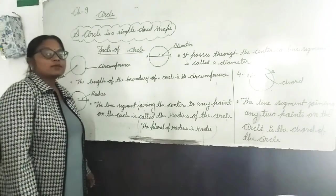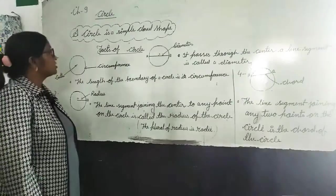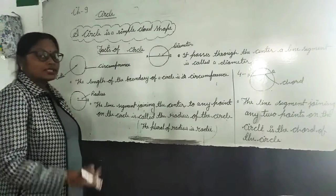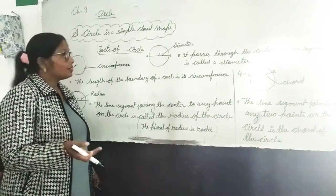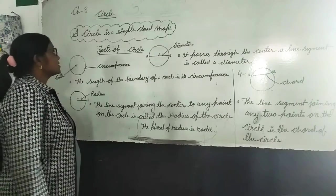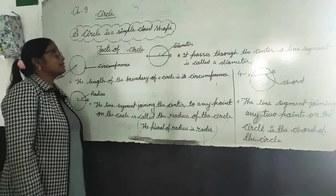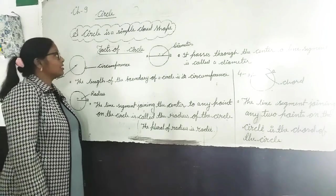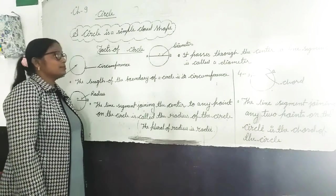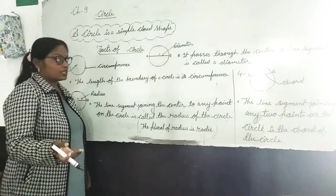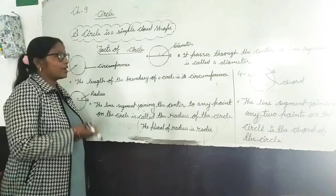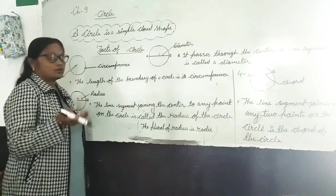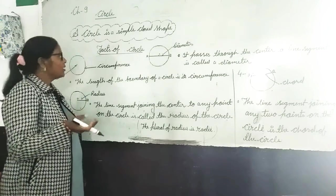So first we will know what is a circle. A circle is a simple closed shape.